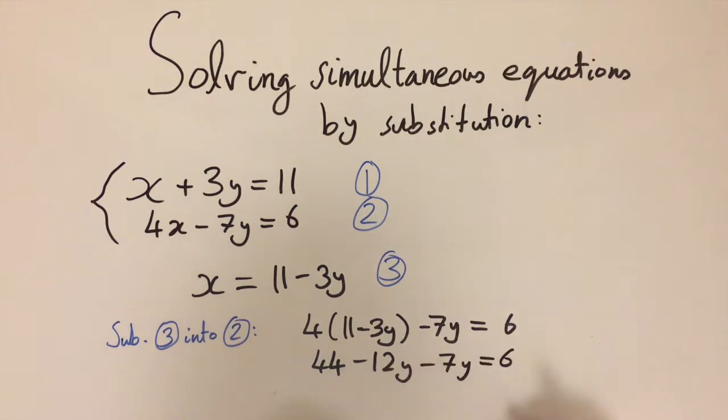We can collect the terms and simplify. This is going to be minus 19y if we move this onto the other side, and 44 minus 6 is 38. So on the left-hand side we get 38, and on the right-hand side we get 19y. To find y we just divide by 19, and 38 is 2 times 19, so this gives us y equals 2.